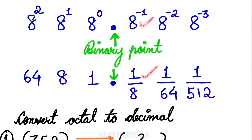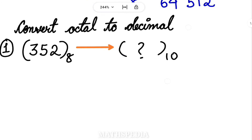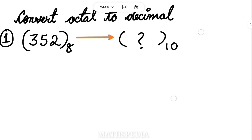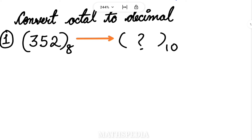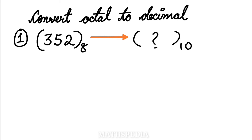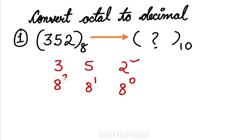8 power minus 1 can be written as 1 by 8, and 8 power minus 2 is 1 by 64, and so on. Now we go directly to the problem. Question 1: convert 352 (octal) to decimal. Starting from the right-hand side, write 8 power 0 under 2, 8 power 1 under 5, and 8 power 2 under 3.